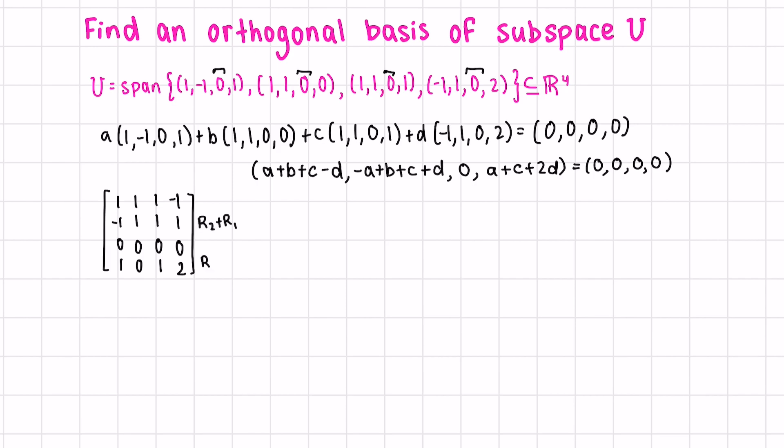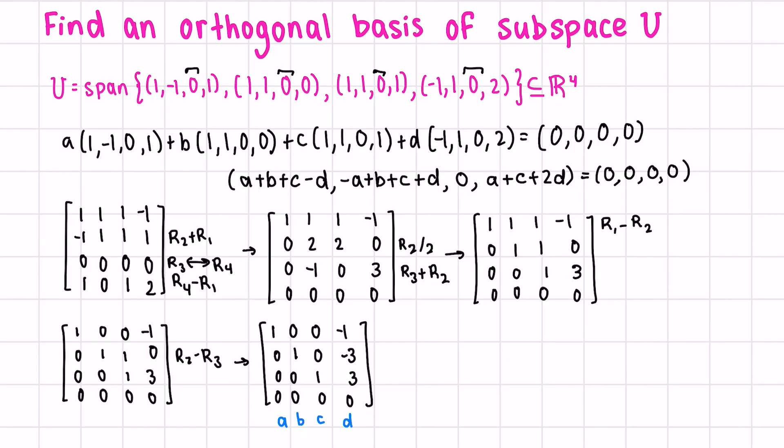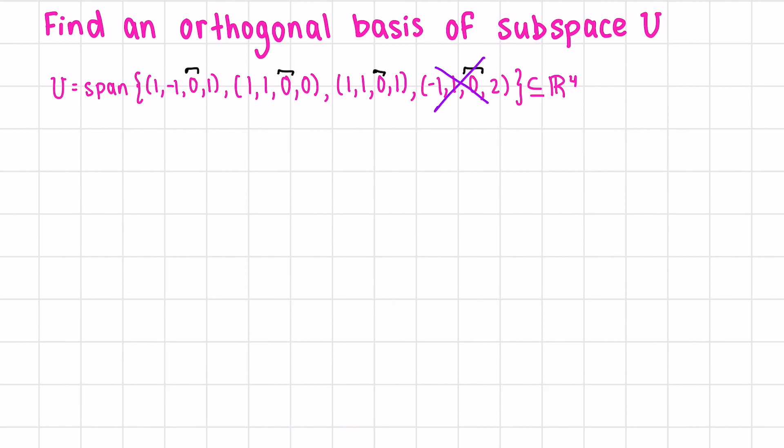We can quickly row reduce. Row 2 plus row 1. Row 4 minus row 1. And switch row 3 and row 4. Row 2 divided by 2. And then we can add row 3 and row 2 together. Row 1 minus row 2. And lastly, row 2 minus row 3. We can now see that the fourth vector is a linear combination of the first three. Negative 1 times the first one, negative 3 times the next one, and 3 times the third vector. Because of this, we can eliminate this vector. And the remaining three vectors form a basis of U.